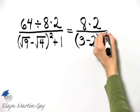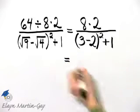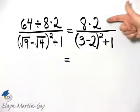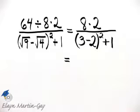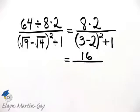Let's continue to work above and below this fraction bar independently. Above the fraction bar, what is 8 times 2? Well, 8 times 2 is 16. Now let's work below the fraction bar.